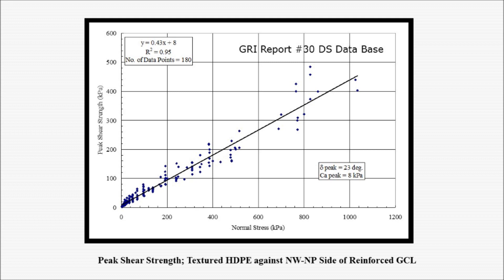I should point out that there are a lot of databases available for direct shear testing. One of the largest is GRI report number 30, which shows a database for peak shear strength of textured HDPE against a needle punch non-woven material—over 180 data points with an R-squared value of 0.95. I should caution you though: you need to do site-specific direct shear testing on your conditions. This database will show you if you're in the right ballpark, but certainly shouldn't be used for final design.